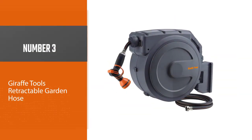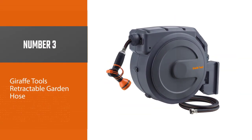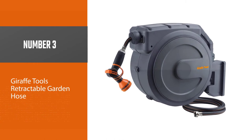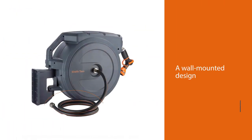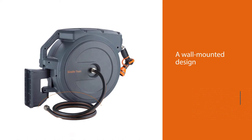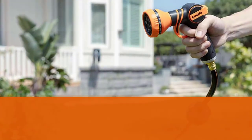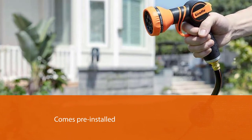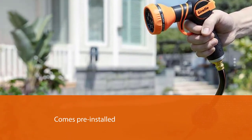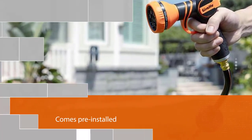Number three: Giraffe Tools retractable garden hose. The Giraffe retractable garden hose reel features a wall mounted design to save space while making yard work much easier. It comes pre-installed with a 130 foot hose with nine spray modes that can be rolled up quickly and neatly without any kinks.